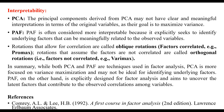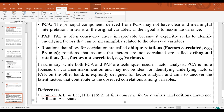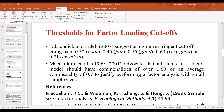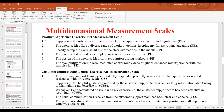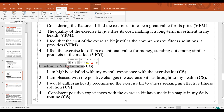In summary, while both PCA and PAF are techniques used in factor analysis, PCA is more focused on variance maximization and might not be ideal for identifying underlying factors. Principal Axis Factoring is explicitly designed for factor analysis and aims to uncover latent factors that contribute to the observed correlations among variables. In this particular study, my focus is to identify the correlations among the variables — specifically to see how product experience, customer support satisfaction, and value for money relate to customer satisfaction.